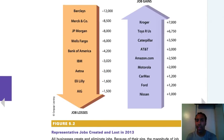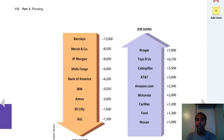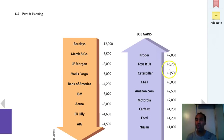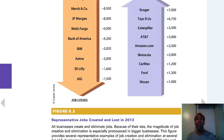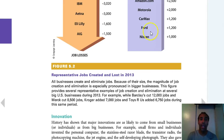Looking at job losses: Barclays minus 12,000 jobs, Merck and Company, JP Morgan, Wells Fargo, Bank of America, IBM, Aetna, Eli Lilly, AIG. On the gains side — who's hiring? Kroger at plus 7,000, Toys R Us, Caterpillar, AT&T, Amazon, Motorola, CarMax, Ford, Nissan — these are all places that are hiring. So if you look at that, those might be somewhere you'd like to go for a job because they seem pretty steady. These are representative jobs created and lost in 2013.